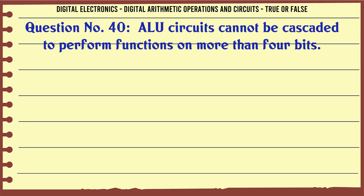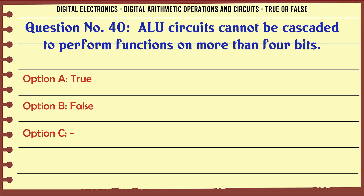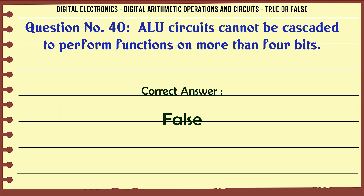ALU circuits cannot be cascaded to perform functions on more than four bits. True or False? The correct answer is False.